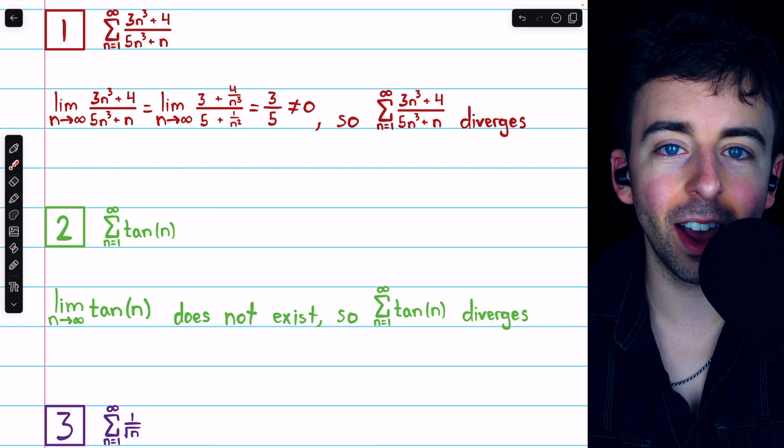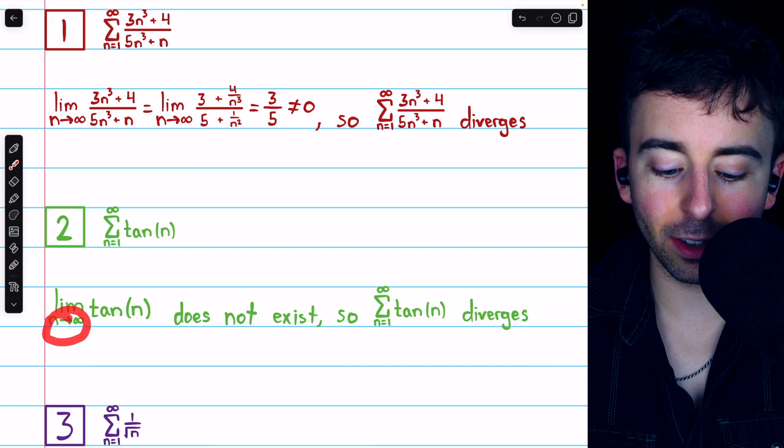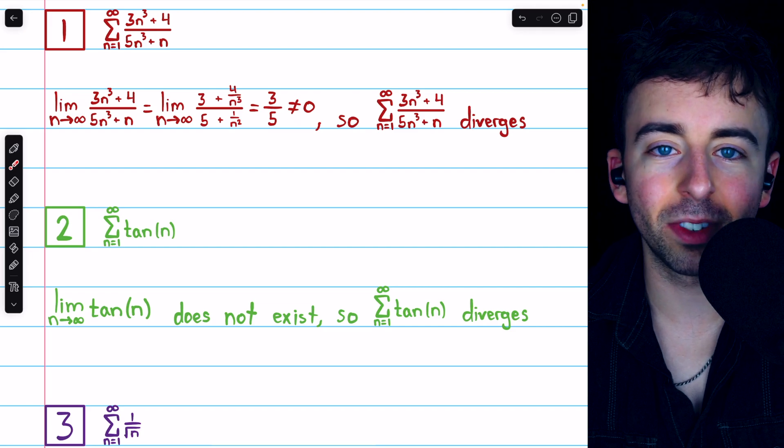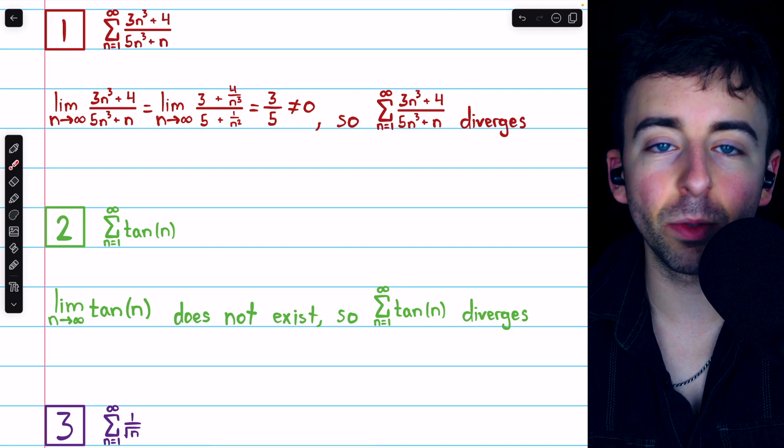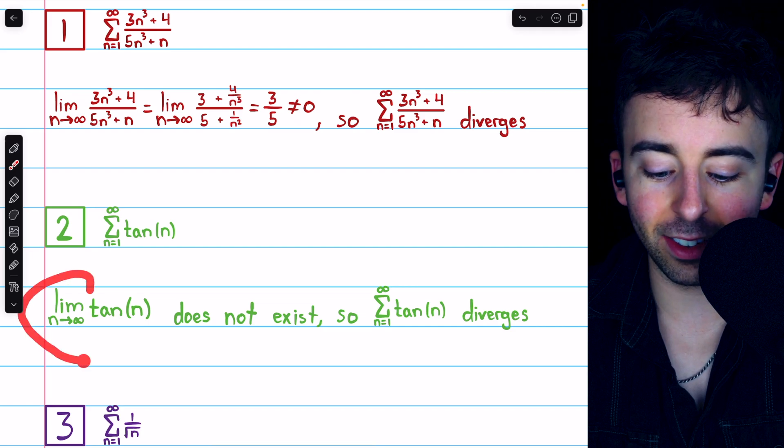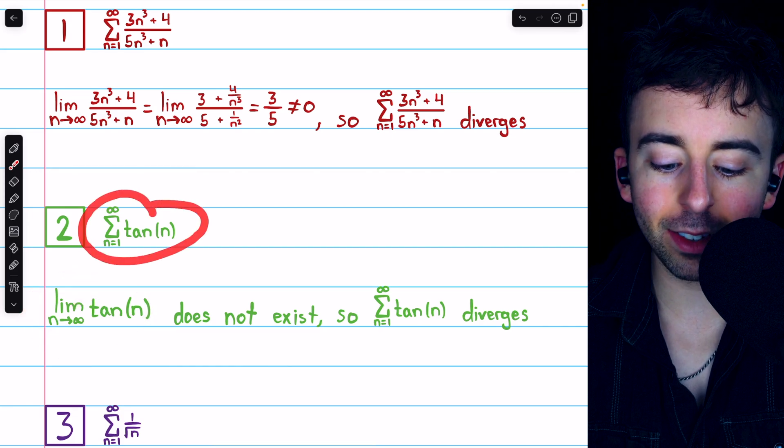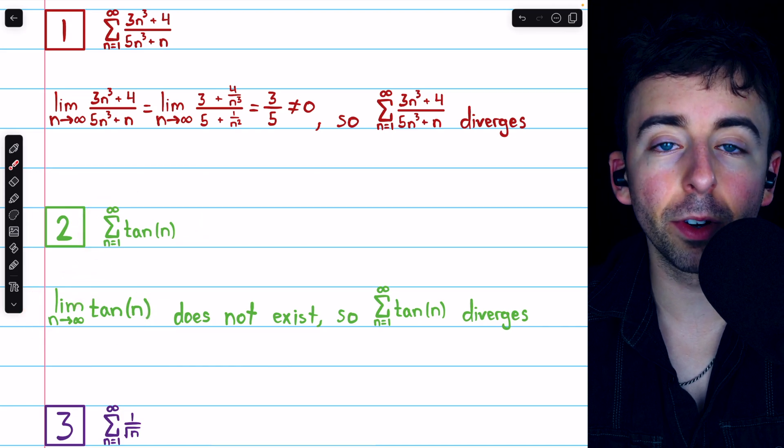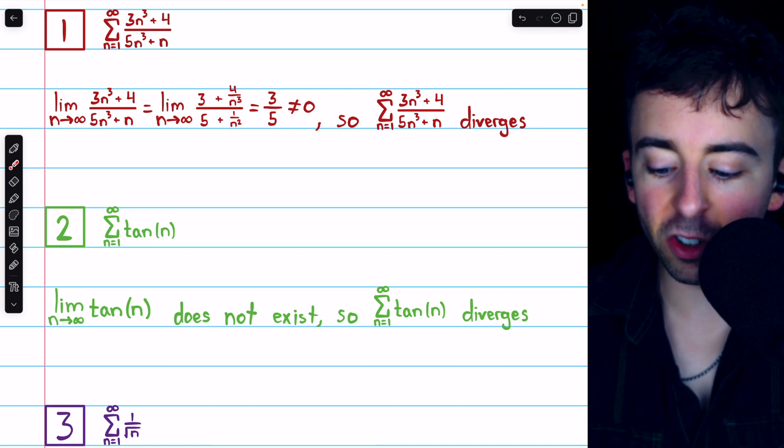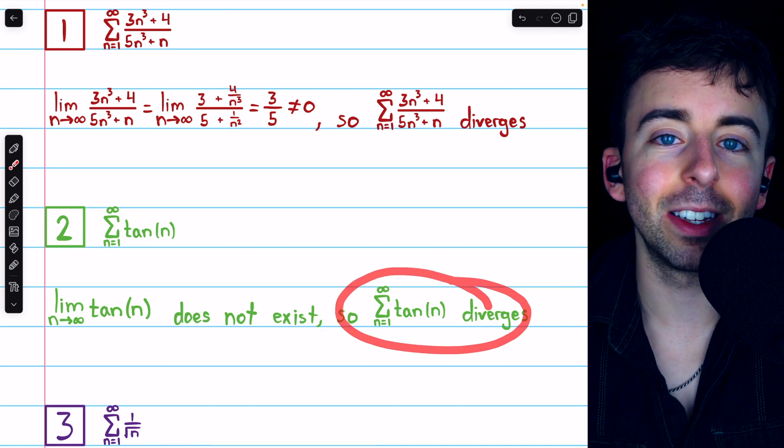Tangent is sine over cosine. And as the input gets larger and larger, sine and cosine oscillate, and tangent will oscillate as well. This does not approach any particular value. Hence, this series, because its terms don't converge to zero, by the divergence test, we know the series diverges.